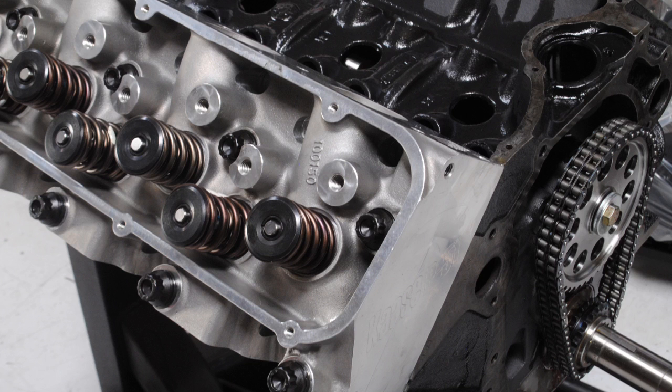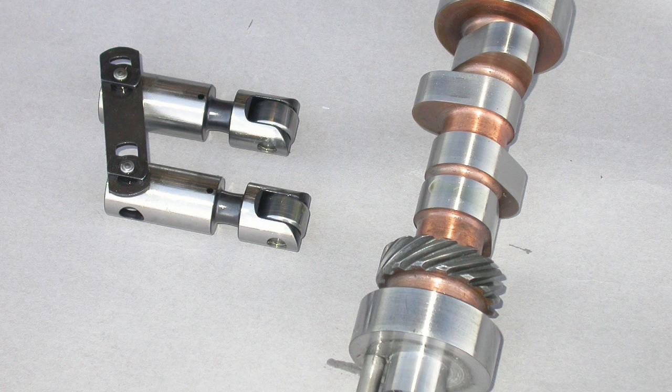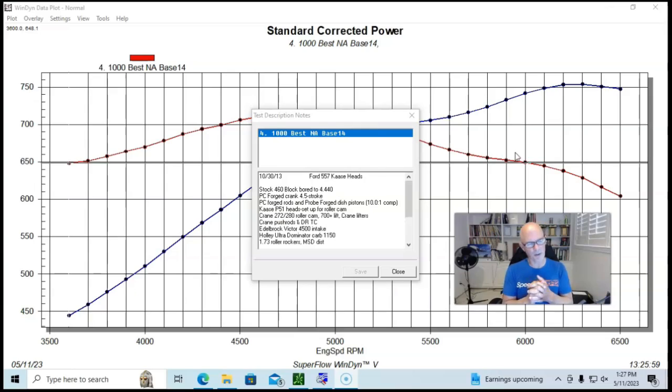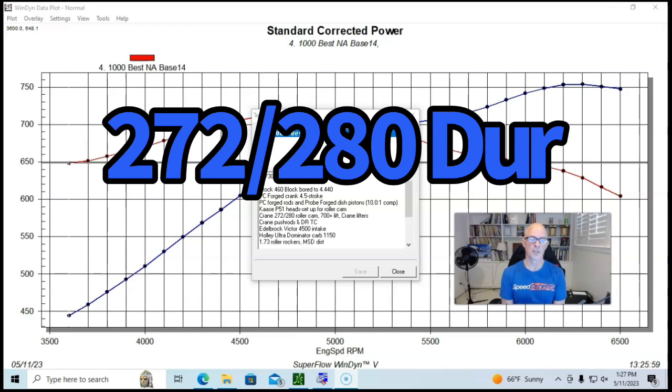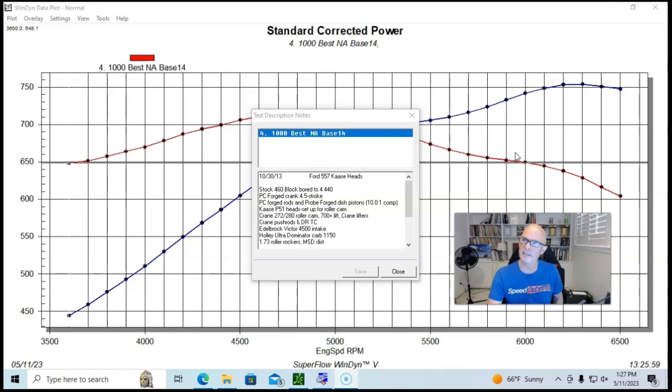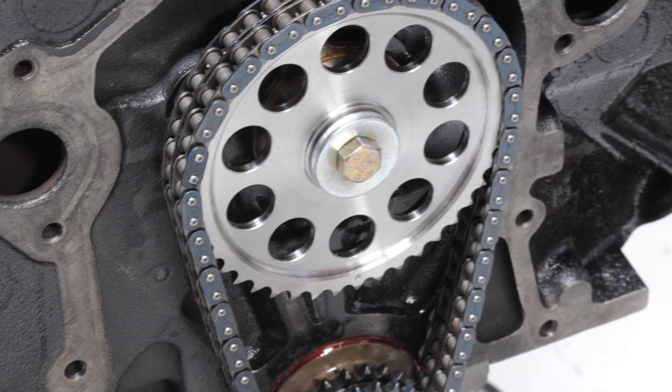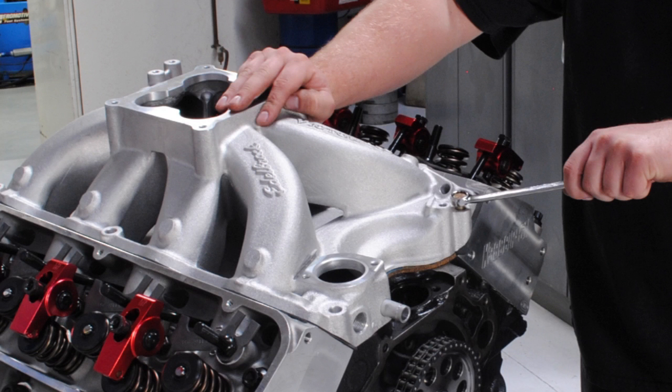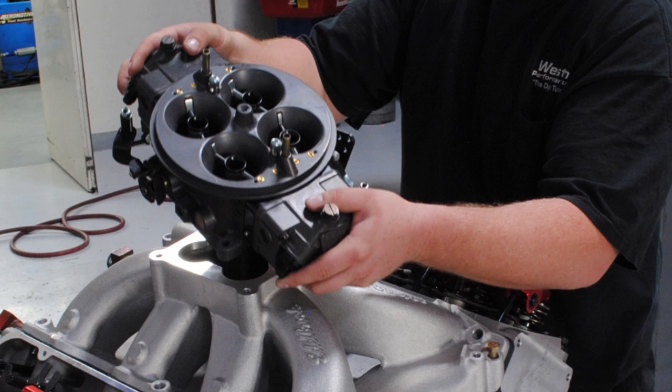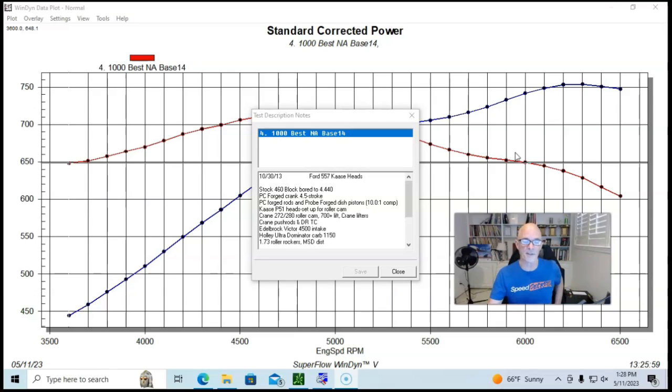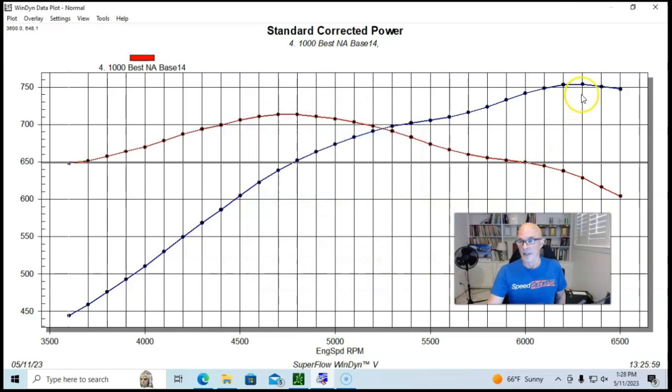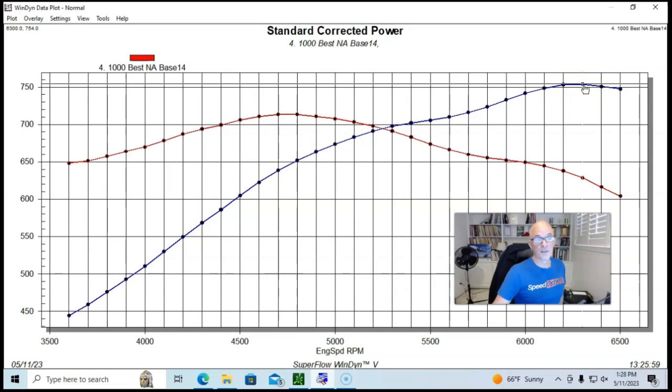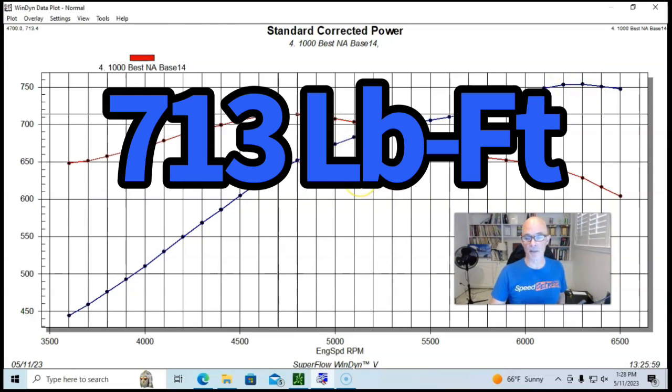This one was from the guys at Speedmaster who also supplied the forged rods and then Probe supplied the forged dish pistons. It turned out to be 10 to 1 in this case. We ran Cozzi P51 heads with spring package set up for our solid roller cam. The solid roller cam was a 738 747 lift. It was a 272 to 80 degree duration split and 111 degree lobe separation angle. We had a double roller timing chain, 1.7 aluminum roller rockers. We had an Edelbrock Victor 4500 intake. We ran a Holley Ultra Dominator 1150 carburetor, single four barrel deal. Run in this manner with the Cozzi heads on this thing. It produced 754 horsepower and 713 foot-pounds of torque.